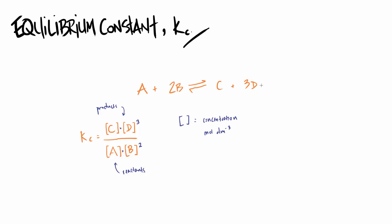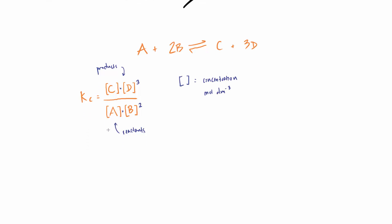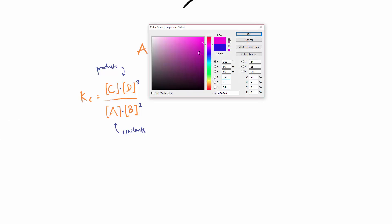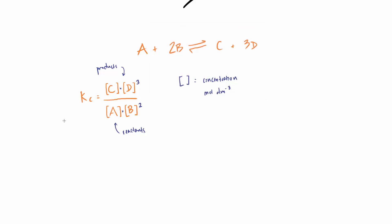So, KC equals concentration of C times concentration of D cubed, over concentration of A times concentration of B squared. A couple of key things about KC: the value of KC generally doesn't change much — in fact it only changes with temperature.